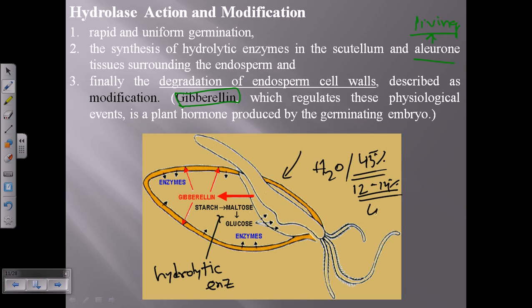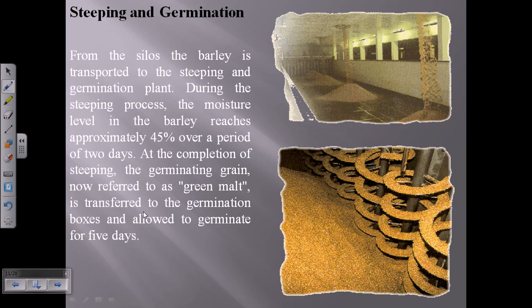After steeping at 45% moisture, the moisture level during germination should be 12 to 14%, and then reduced to below 4% during kiln drying. Every single stage is tightly regulated to produce a perfect quality malt for beer preparation. In the steeping stage, barley is dipped in water to reach 45 to 48% moisture, then placed into the germination bed. After germination produces green malt, it is allowed to dry.